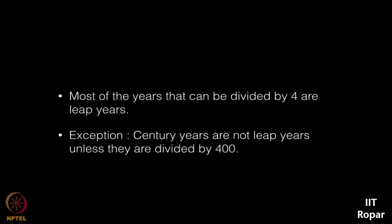So how can we determine that a given year is a leap year or not? For a leap year, most of the years that can be divided by four are leap years. But there is an exception here. Century years — like 500, 600, 1000, 1600, 1700 — are not leap years unless they are divided by 400.